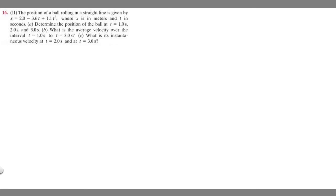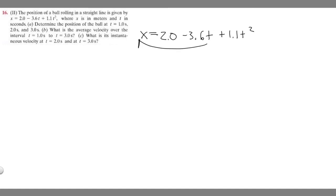Let's start with part A, which asks us to determine the position of the ball at t equals 1, 2, and 3 seconds. To find that, let's rewrite our position function: x equals 2 minus 3.6t plus 1.1t squared. This function gives us the position at any time t. All we have to do is plug in each individual time to get the position at that time.